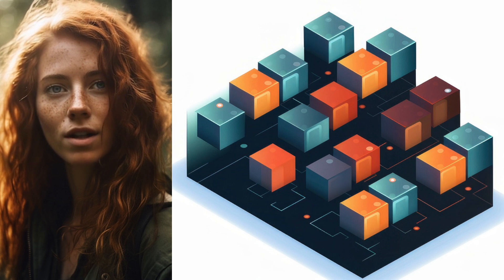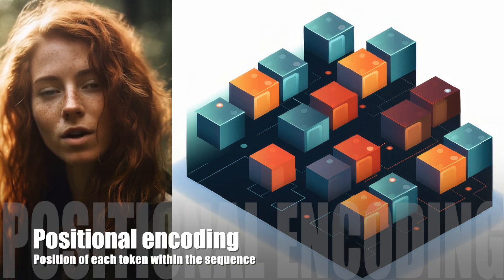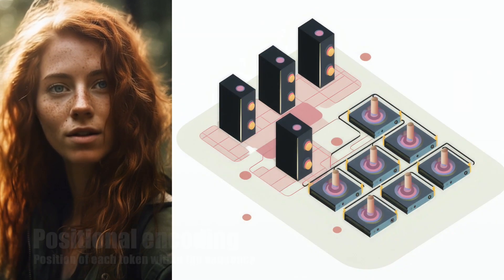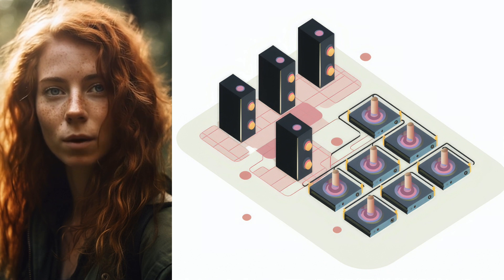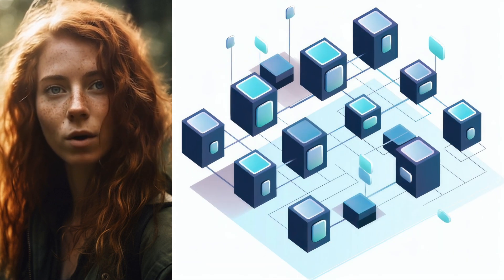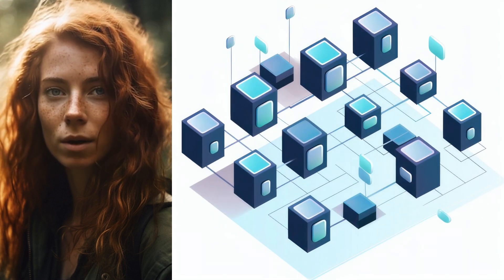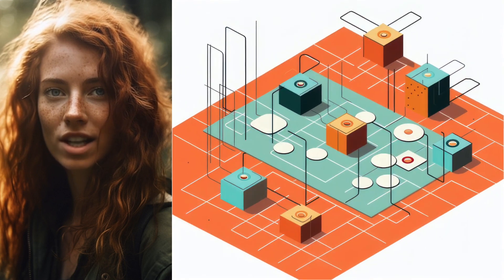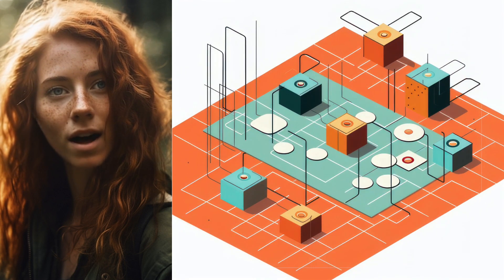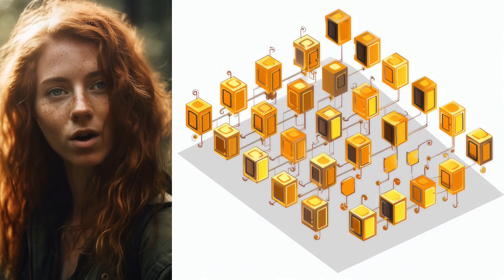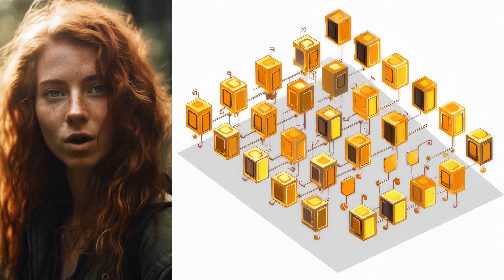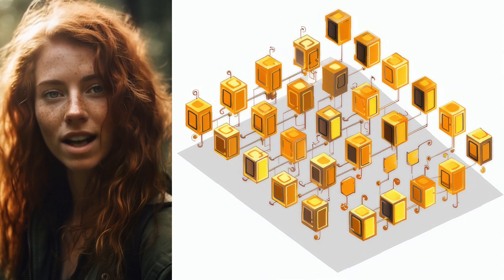Positional encoding: Since the transformer architecture doesn't have inherent knowledge of the order of input tokens, positional encoding is used to provide information about the position of each token within the sequence. This is done by adding a vector representing the position of each token to its corresponding embedding.